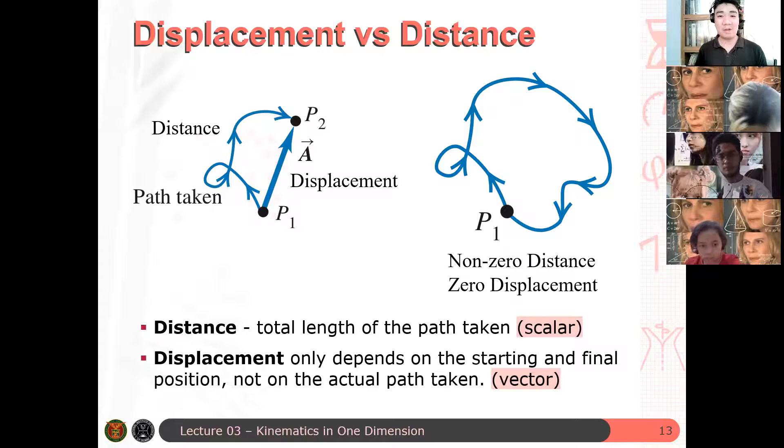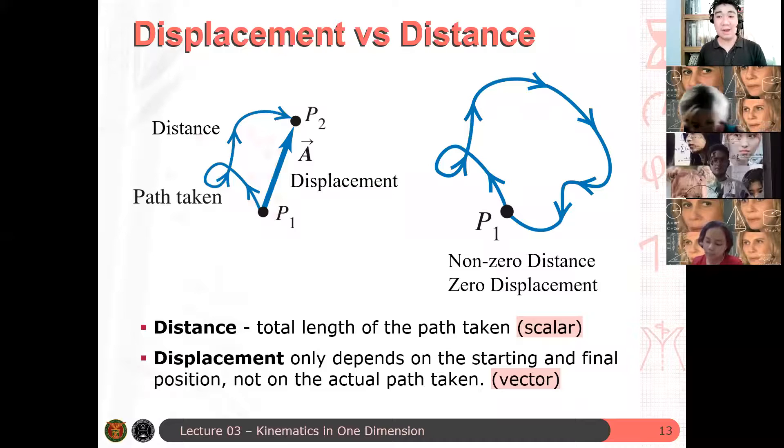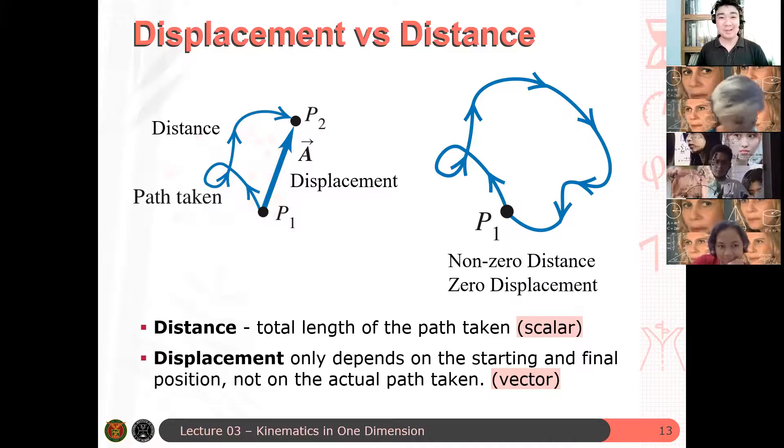Whereas a displacement only depends on the starting and final positions of the particle. So it doesn't matter what path does the particle took, what the particle taken, sorry, the path taken by the particle is not important. The only thing that's important here is the initial and the final positions of the particle. Again, distance is a scalar, displacement is a vector. Huwag kakalimutan yan. May tanong ba rito?